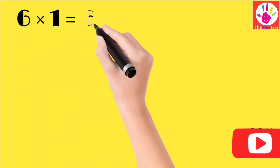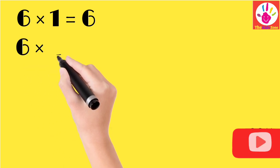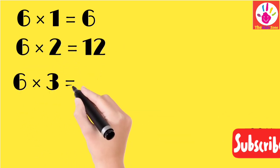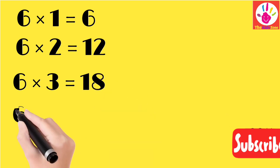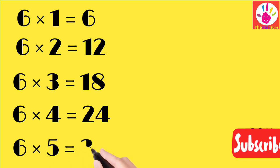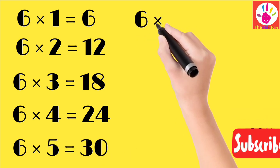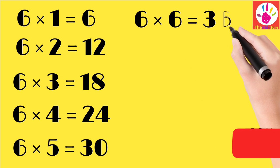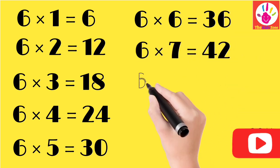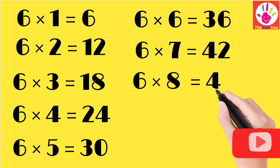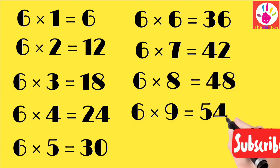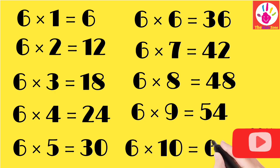Table 6: 6 ones are 6, 6 twos are 12, 6 threes are 18, 6 fours are 24, 6 fives are 30, 6 sixes are 36, 6 sevens are 42, 6 eights are 48, 6 nines are 54, 6 tens are 60.